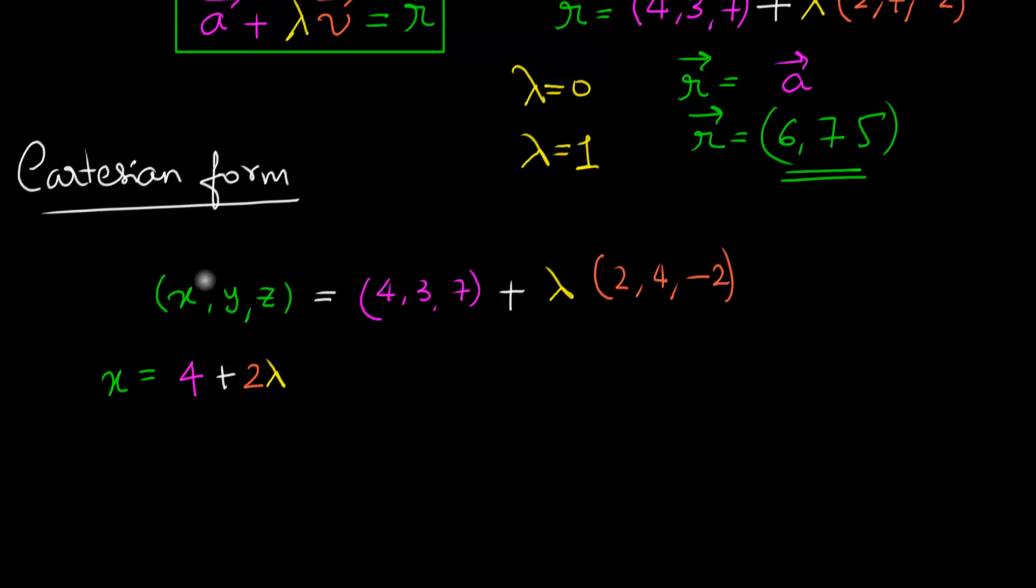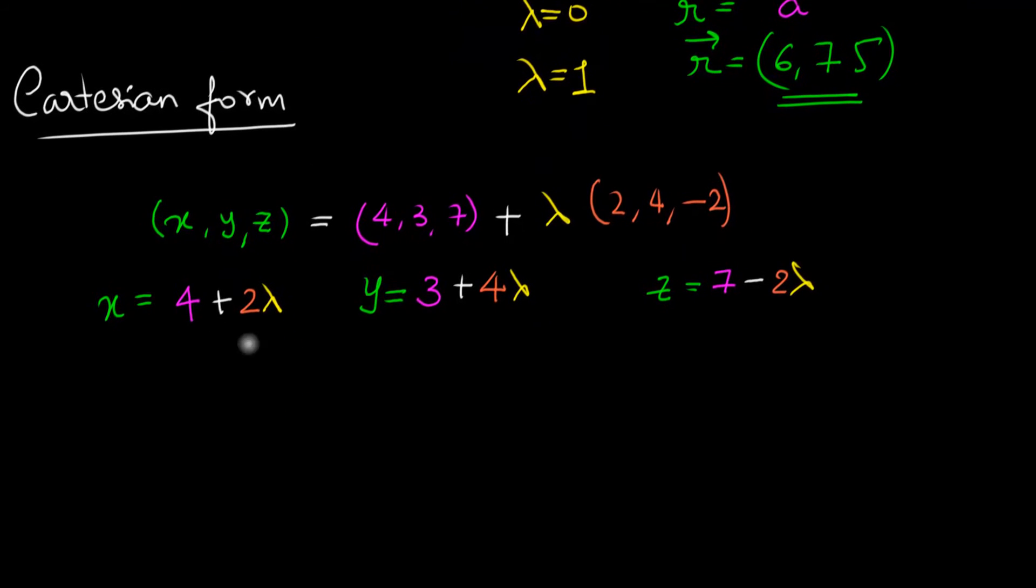Similarly, y equals 3 plus 4 lambda. And finally, z. Well, you ask, how do I convert this into a Cartesian form?